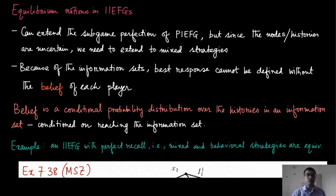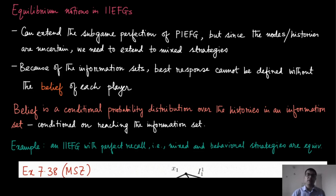In the previous modules we introduced the notion of imperfect information extensive form games and defined what strategies are in this kind of game representation. In this module we are going to discuss equilibrium notions in this kind of game representation. We have seen that the imperfect information extensive form game is a generalized version of the perfect information extensive form game, where we had the equilibrium notion of sub-game perfection — finding the Nash equilibrium at every history, always guaranteed to find one such sub-game perfect Nash equilibrium which is the most reasonable outcome.